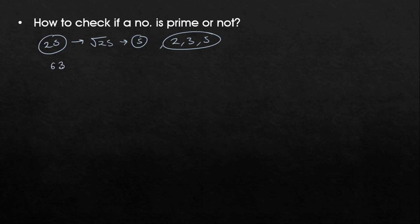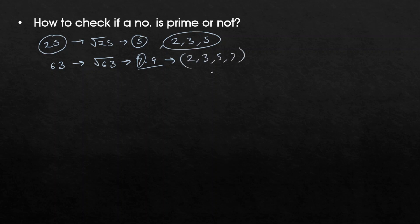For a larger number like 63: √64 = 8, so √63 ≈ 7.9. Check divisibility by all primes up to 7 — that is 2, 3, 5, and 7. If 63 is divisible by any one of them, it's not prime; if not divisible by any, it's prime.